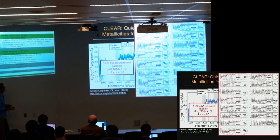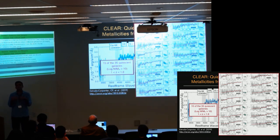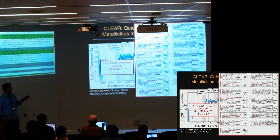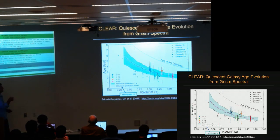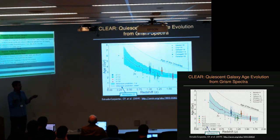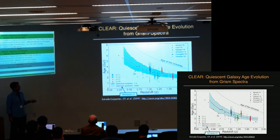There are 35 galaxies that Vince used in this mass range and redshift range. You get different qualities of fit depending on the redshift because that shifts spectral features in and out of the band, and data quality can vary from object to object, but we're still able to place good constraints on these parameters — particularly metallicity and age. You can then begin to make plots using these likelihoods, such as the ages of the galaxies on the y-axis against their observed redshift.